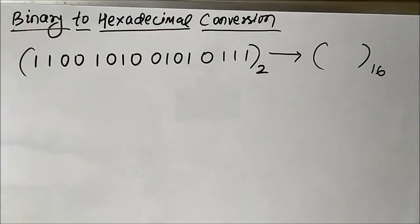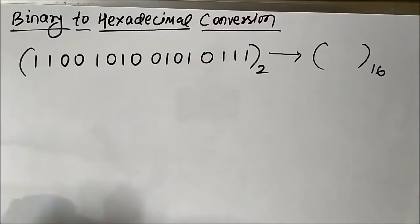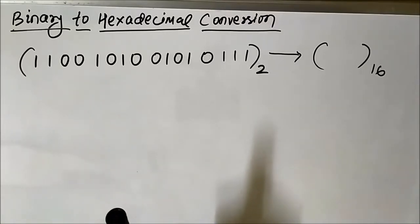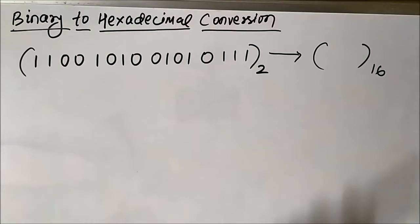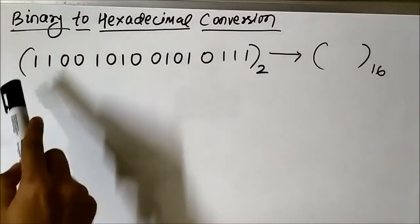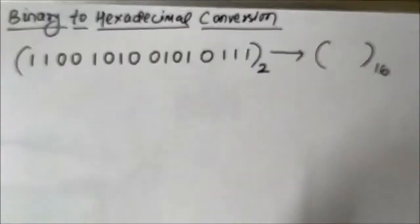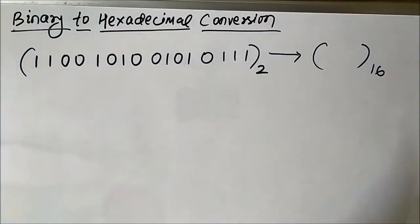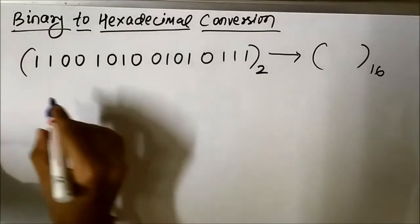We will use the same principle of grouping which we used in binary to octal conversion. The only difference is that in binary to octal conversion we grouped the binary digits into 3-bit groupings, but in binary to hexadecimal conversion we will group them into 4-bit groupings. So we will form 4-bit groups.